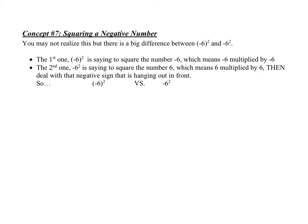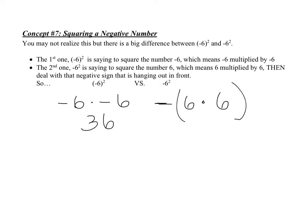So the second one is saying that you square the number 6, which means 6 times 6, then deal with that negative sign that's hanging out in the front. So to recap: this first one, negative 6 squared, is saying negative 6 times negative 6, which — a negative times a negative — we know is positive 36. The next one, the little exponent, is only attached to the 6, so it's just saying 6 times 6, and then you tack the negative on the outside.